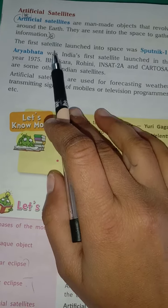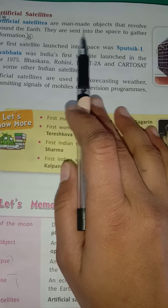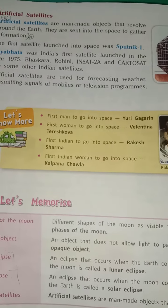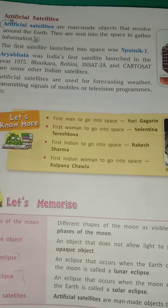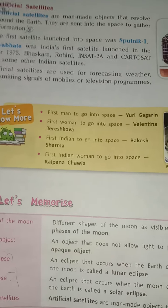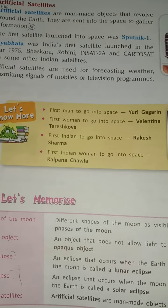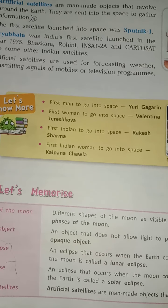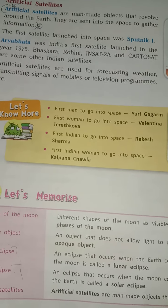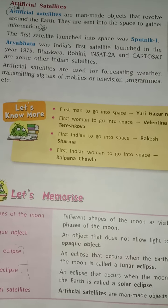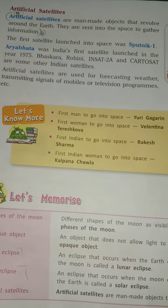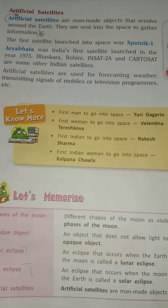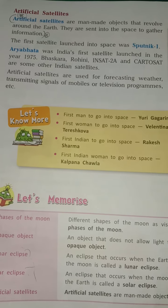Artificial satellites are man-made objects that revolve around the Earth. They are sent into space to gather information. We send artificial satellites into space for gathering information.